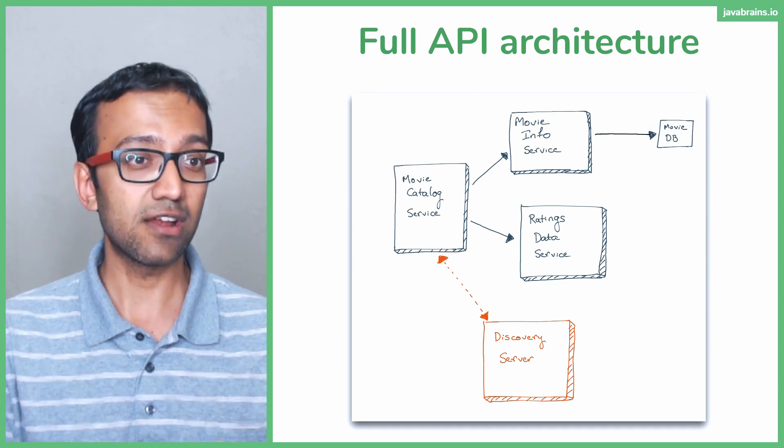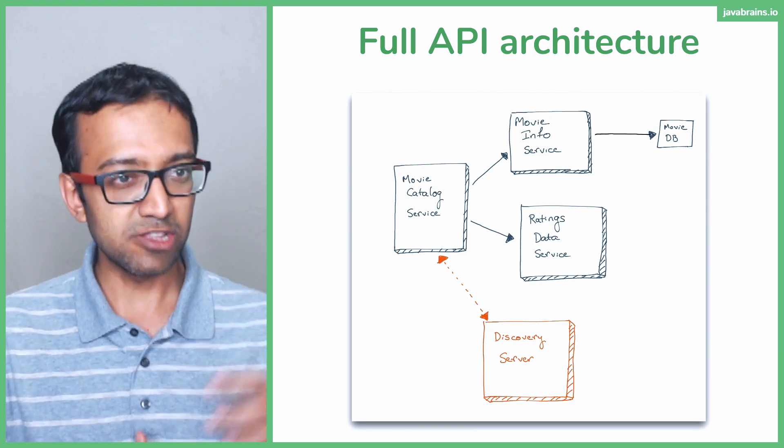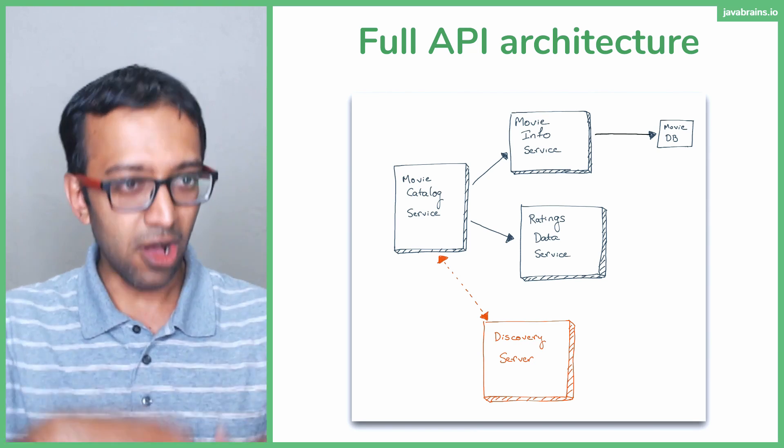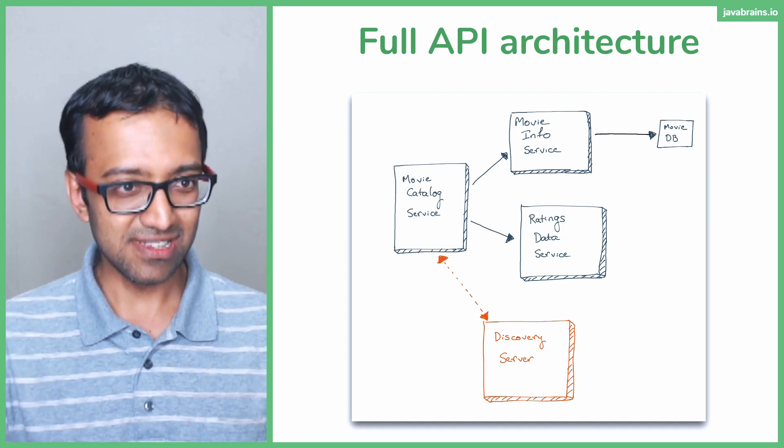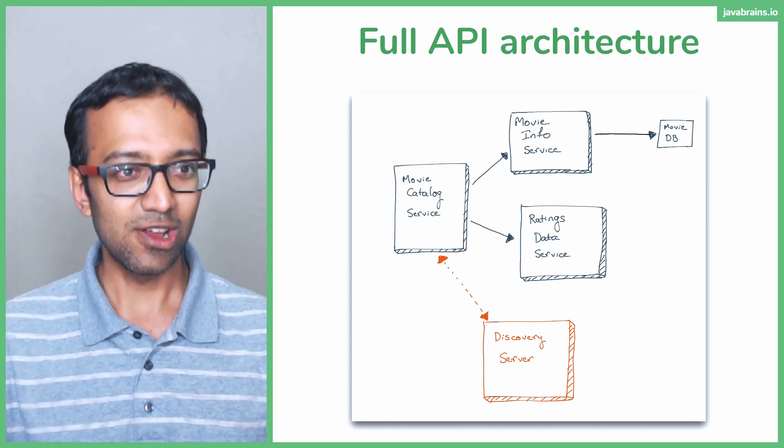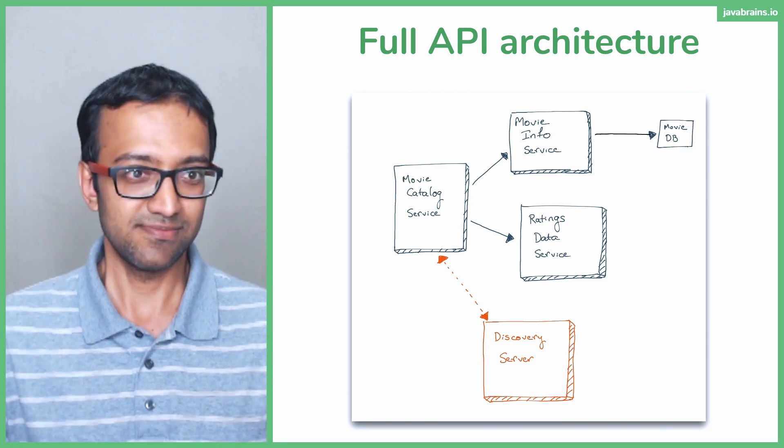Look at what the movie catalog service is doing. It's making a call to one service, getting the response, using the response to make a call to the second service, putting all that together and returning the response back. So if either of those services is down, the movie catalog service is down. It's not fault tolerant.